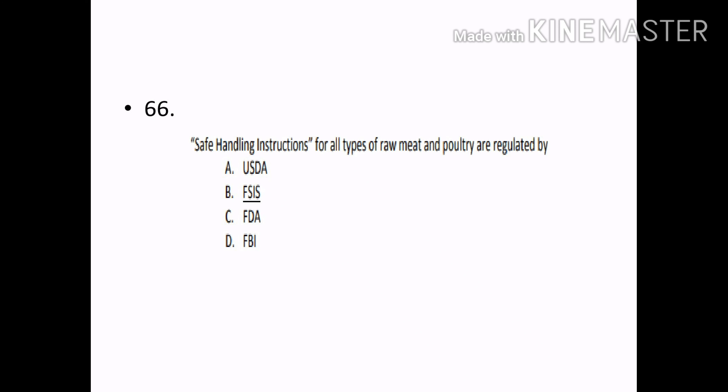Safe handling instructions for all types of raw meat and poultry are regulated by: Options — USDA, FSIS, FDA, FBI. Correct answer: Option B — FSIS.